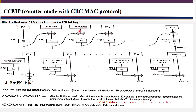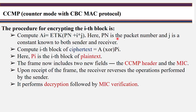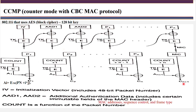On the receiver side, the same procedure is performed in reverse order, and MAC verification is done. The receiver extracts the last ciphertext packet CN and the MIC separately, then performs the reverse procedure to obtain the initialization vector, calculates the integrity value, and checks whether it matches. If it is different, integrity is not protected. If it is the same, integrity is confirmed.